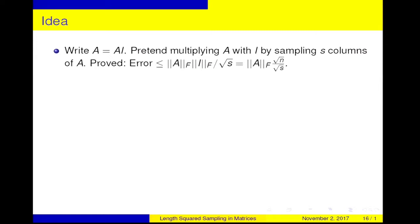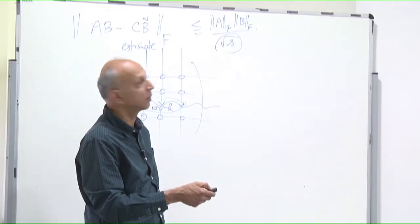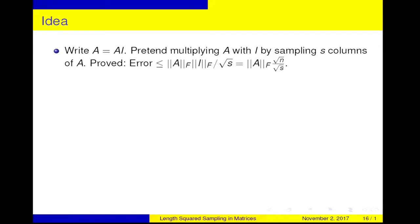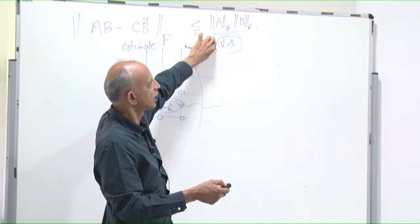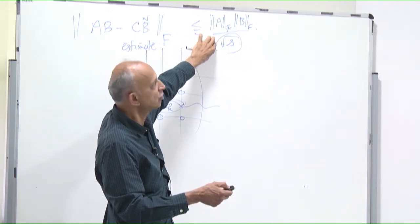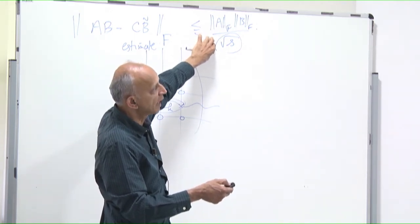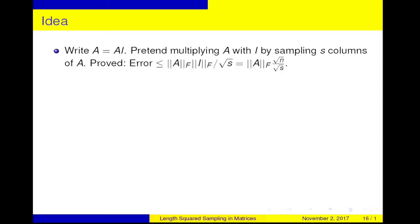Now the idea. I'm going to do a funny thing: I'm going to pretend I'm multiplying A with the identity matrix. I'm going to apply the matrix multiplication result to that pretend multiplication. So we are multiplying A with I, sampling S columns of A. Then the error from here is the Frobenius norm of A times Frobenius norm of I, divided by root S. But the Frobenius norm of I is root N, so the Frobenius norm squared is N.